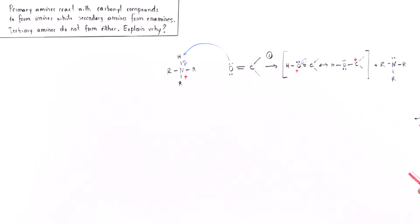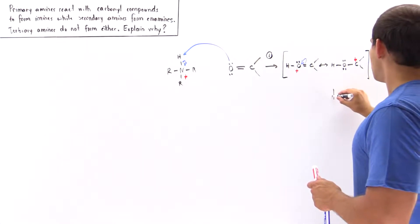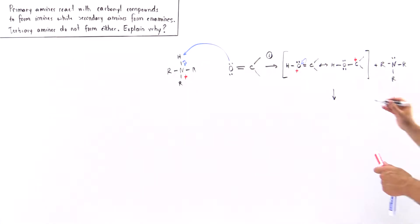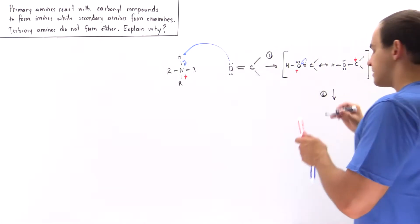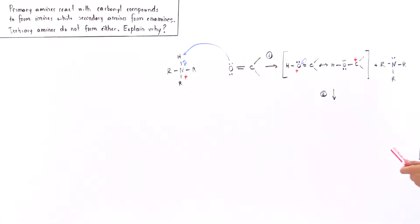Now, what about step two? Step two basically takes place when these two electrons act as the nucleophile attacking this carbon, basically forming a bond between this nitrogen and this carbon.